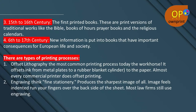First, offset lithography — the most common printing process today, the workhorse. It offsets ink from metal plates to a rubber blanket cylinder, and then to the paper. Almost every commercial printer does offset printing. Second, engraving — used for fine stationery, it produces the sharpest of all image fields. You can feel the indentation if you run your fingers over the back side of the sheet. Most law firms still use engraving.